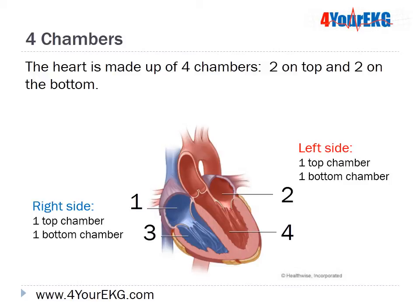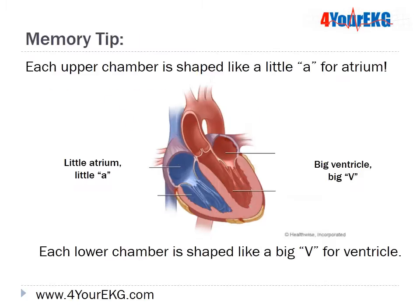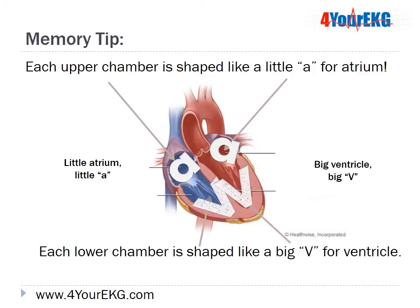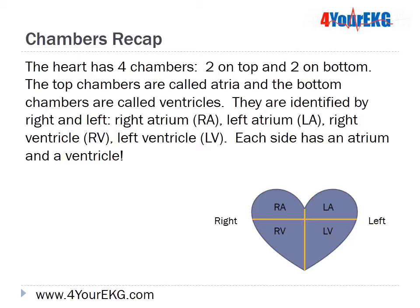The heart is made up of four chambers — two on top and two on the bottom. Each upper chamber is called an atrium, and each lower chamber is called a ventricle. Each upper chamber is shaped like a little 'a' for atrium, and each lower chamber is shaped like a big 'V' for ventricle. The chambers are identified by right and left based on which side of the heart they're on: the right atrium, left atrium, right ventricle, and left ventricle.